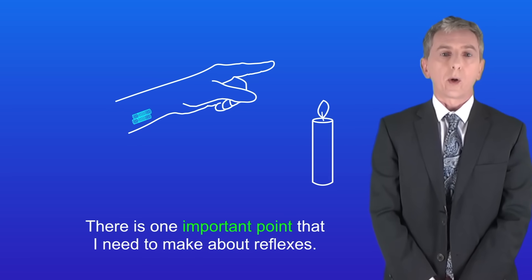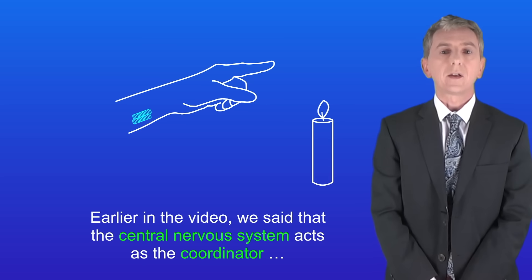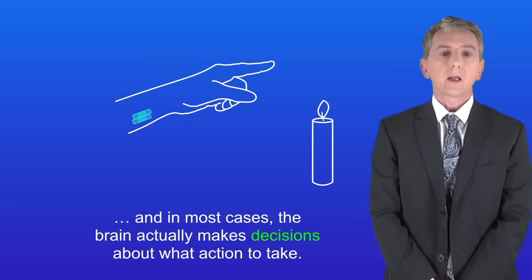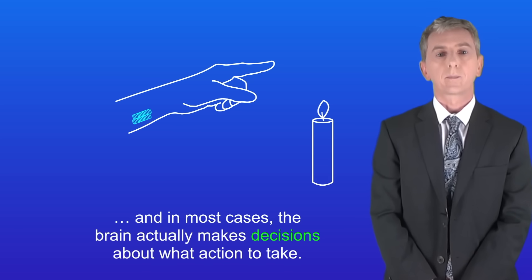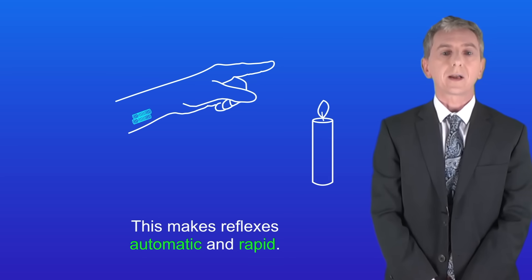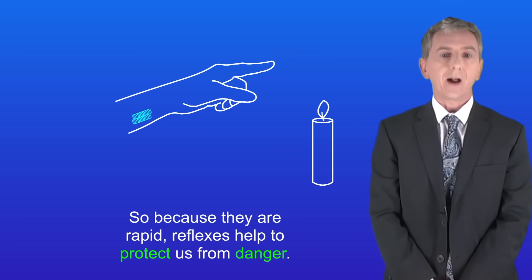Now there is one important point that I need to make about reflexes. Earlier in the video we said that the central nervous system acts as the coordinator. And in most cases the brain actually makes decisions about what action to take. However, in the case of reflexes, there is no decision making by the conscious part of the brain. This makes reflexes automatic and rapid. So because they're rapid, reflexes help to protect us from danger.